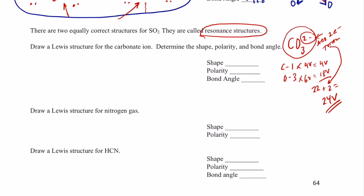So we have four plus 18, that gives us 22. But don't forget to add these two to our total because it's a 2- ion. We're allowed 24 valence electrons in our Lewis structure. Why don't you pause the video and try finishing this up, then come back and check your work with my work.